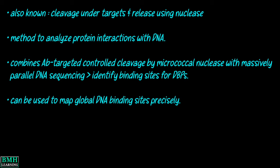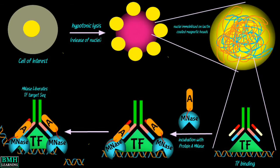The basic idea of CUT&RUN is to incubate the unfixed and permeabilized cells with antibodies targeted to the protein of interest. This complex can then be recognized by Protein A.